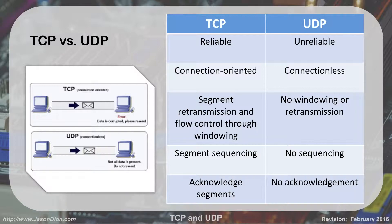With TCP, we have segment sequencing. When I send that book to Nick, 10 pages at a time, the packets might take different routes to get there, but when he gets them he can put them back in order because they have page numbers. With UDP, packets can take different routes and arrive in different orders — if they get there at different times, he reads them in different orders. So TCP allows us to put data back in order; UDP has no sequencing.